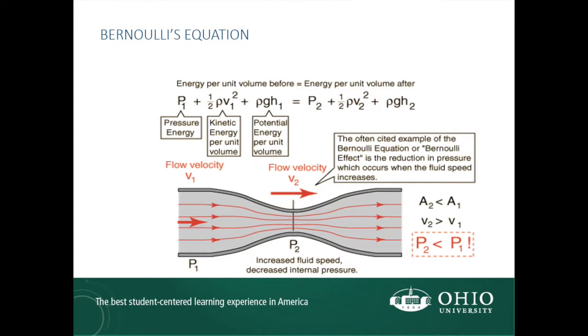For example, at point 1 we have a large area, a velocity v1, and a pressure p1. If the area reduces at point 2, the velocity must increase. Since we have an increased velocity at point 2, and the elevations are the same, the pressure at point 2 must be less than p1 in order for Bernoulli's equation to hold true.